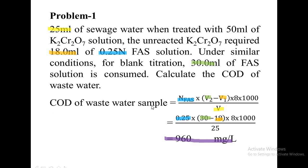The COD of the wastewater sample using a direct formula is: normality of FAS into (V2 minus V1) into 8 into 1000, divided by V. Here V2 is the volume of FAS used for blank titration, and V1 is the volume used for back titration. V is the volume of the sewage water or waste water taken for analysis. N_FAS is normality of FAS, and 8 is the equivalent mass of oxygen. The unit of COD is milligrams per liter.